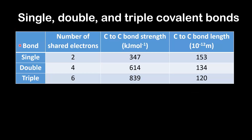In the first column we have the type of bond: single, double, and triple. The second column has the number of shared electrons: 2, 4, and 6. The next column has the carbon to carbon bond strength in kilojoules per mole. The final column is the carbon to carbon bond length in 10 to the negative 12 meters. As we go from single to double to triple, the bond strength is increasing, and the bond length is decreasing.